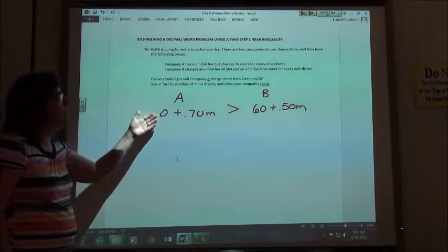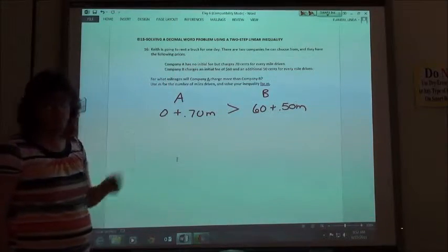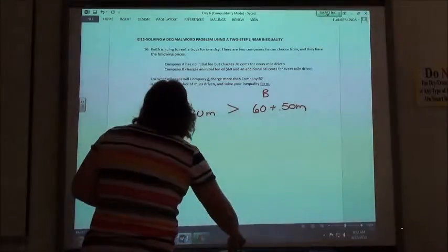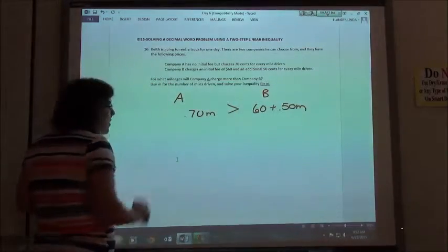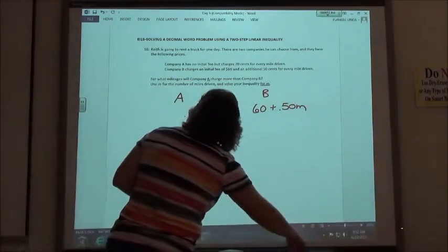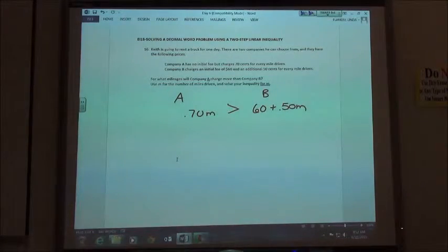Now, I really didn't need this zero, but I wanted to point out no initial fee is zero, so you really could get rid of that from your inequality and just use 0.70M is greater than 60 plus 0.50M.